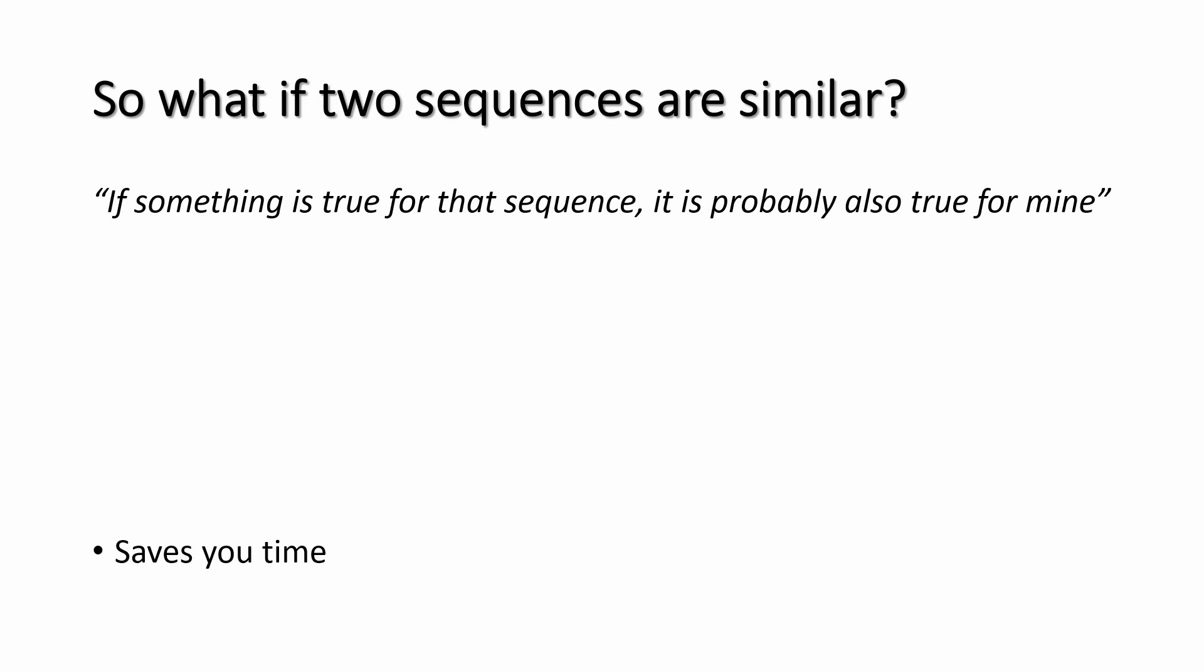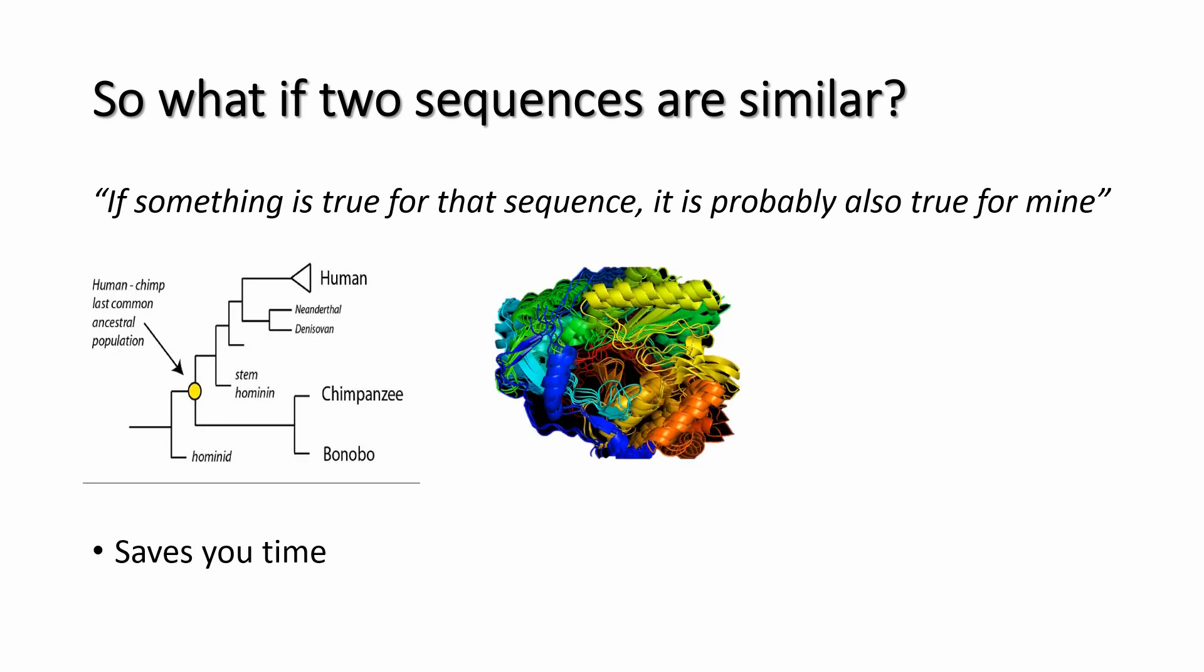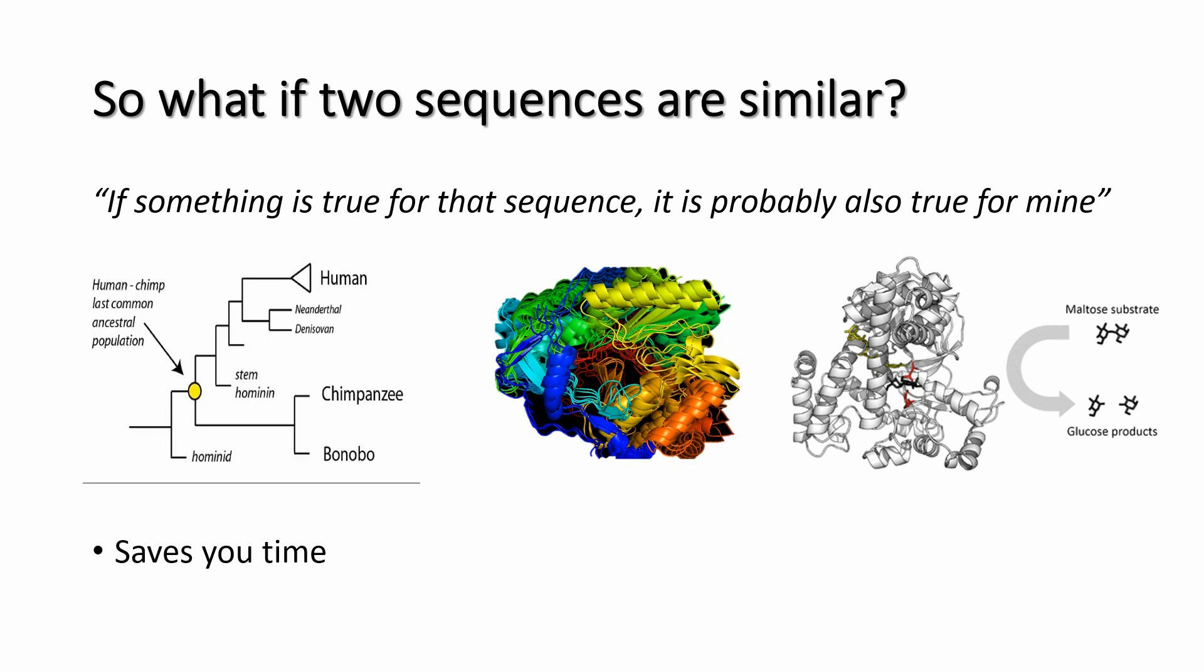So what if two sequences are similar? If something is true for that sequence, it is probably also true for mine. They probably share the same ancestor. They probably fold into a common three-dimensional structure for homology modeling. They probably perform a similar biological function. If they share the same structure and sequence, it saves your time and effort. Sometimes studying a gene in the lab takes years. These principles hold even if two sequences from different organisms are related to each other.